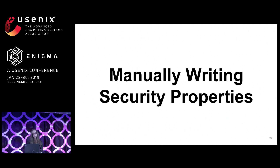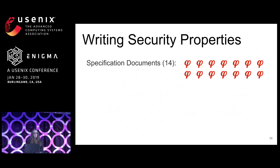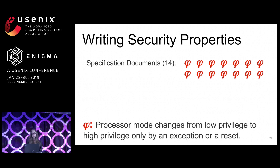The outcome of that project was a better understanding of the types of vulnerabilities that exist. We then set ourselves the task of writing a set of properties that, if enforced, would strengthen the security of the processor. We studied the instruction set architecture specification of the OR1200 open source RISC processor to determine, through our knowledge of the architecture and our background in security, what the core properties are that should be enforced. Through this exercise we developed 14 properties critical to security. For example, in the OR1200, a mode change from low privilege to high privilege should only occur through an exception or a reset — any other escalation would indicate an exploitable bug.